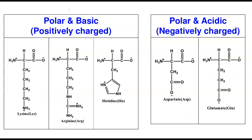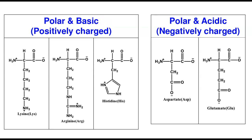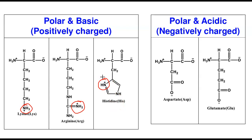The remaining five amino acids are the polar basic and polar acidic groups. Polar basic, or positively charged, amino acids have a side chain that is ionized at physiological pH and carries a positive charge. They have an additional amino group at the end of a long side chain, making them positively charged. Arginine similarly has an ionizable group, and histidine has an ionizable amino group. At physiological pH of 7.4, they are all positively charged overall.